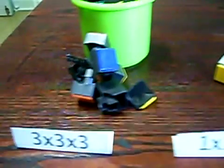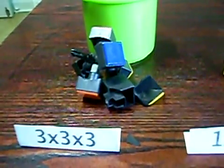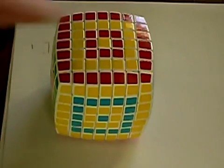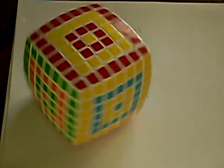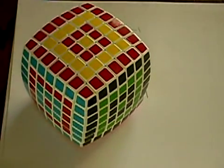Well, almost complete. Anyway, if you're wondering why the V-cubes 7 has such chunky curves, the reason is very simple.